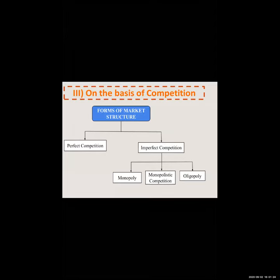Now tell me the features of perfect competition. Yes, correct — single price. Zoil replied: there is one single price at which each and every seller will sell their product and buyer will purchase the product. Orjit replied: homogeneous product — yes, identical product, same size, color, shape. Pretty replied: large numbers of buyers and sellers — yes, we have many buyers and sellers.